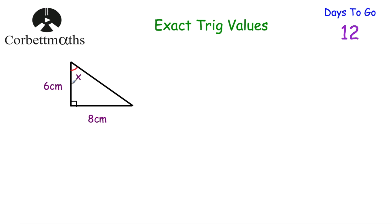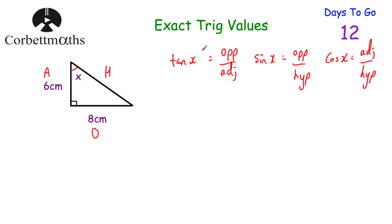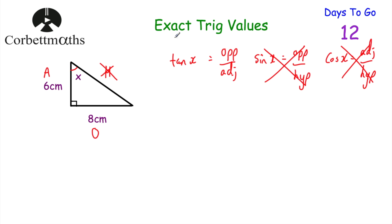Okay, so we've now got our other triangle and we want to find the size of this angle x. So let's label our sides. Opposite the right angle will be the hypotenuse, opposite the angle we're trying to find will be the opposite, and the other side will be the adjacent. The trig ratios: tan equals opposite over adjacent, sine equals opposite over hypotenuse, cos equals adjacent over hypotenuse. We're using the opposite and the adjacent, so we cross off the hypotenuse and any ratio using it — so we're not using sine or cos. In this question we're using tan.